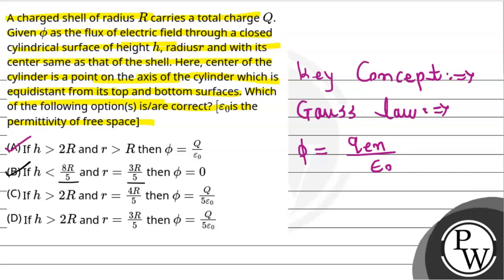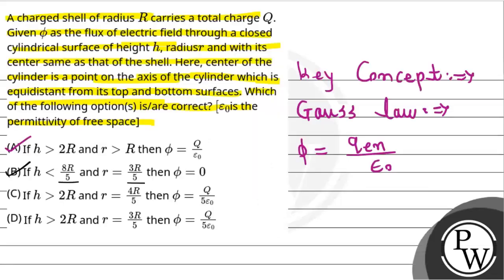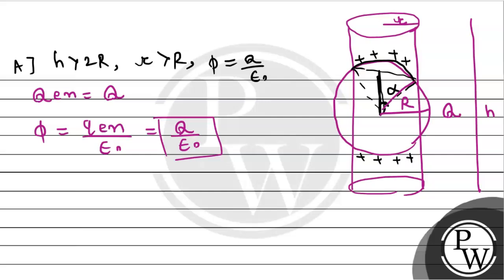So Option B is correct. Now looking at Option C: h is greater than 2r and r equals 4R/5. We will use the hemispherical part analysis. With respect to angle alpha, the formula for charge enclosed will be: Q_enclosed equals Q times (1 minus cosine alpha). This is a direct formula. So now from the figure, sine alpha equals small r divided by capital R.